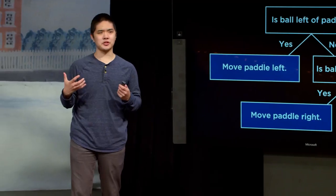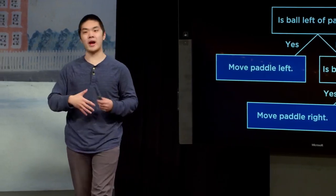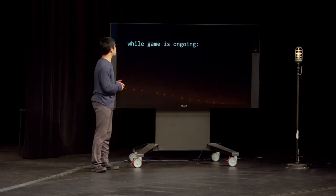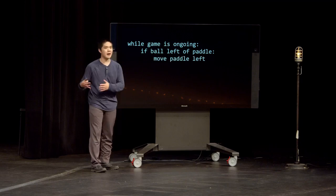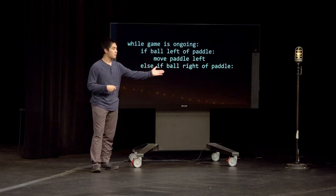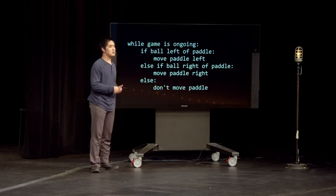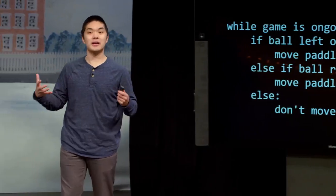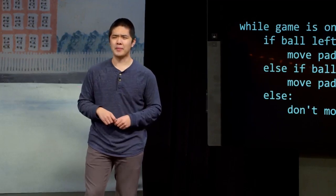We could take that decision tree and turn it into a kind of pseudocode, something that might look like C or Python. While the game is ongoing: if the ball is to the left of the paddle, move the paddle to the left; else if the ball is to the right of the paddle, move the paddle to the right; else don't move the paddle at all. One of the advantages of this decision tree is that it translates quite nicely to the conditions you're familiar with from programming.